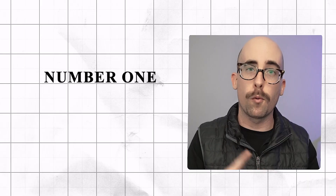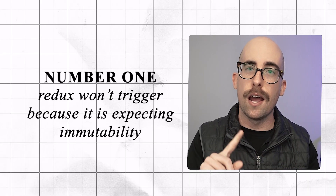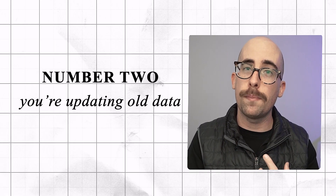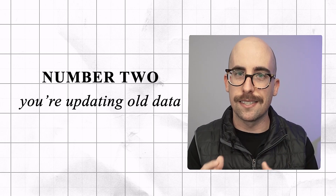That's the main difference, and that is why it's necessary to use the spread operator when updating state — because you want an entirely new copy. If you simply make an update to an old array or object, number one Redux won't trigger because it's expecting immutability, and number two you're updating old data and you can't ensure its consistency.